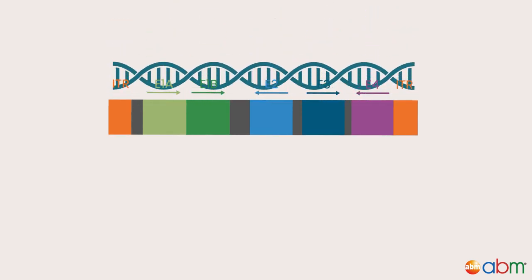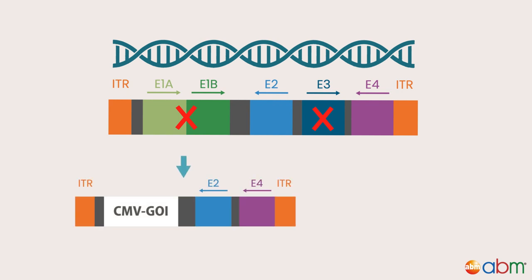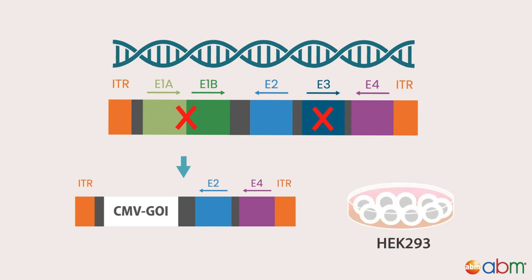ABM's adenovirus expression vector is designed without the early viral transcription units E1 and E3 proteins, and is therefore replication defective. As a result, recombinant adenovirus packaging requires cell lines expressing the E1 gene, such as HEK293 adherent cells or suspension cells.